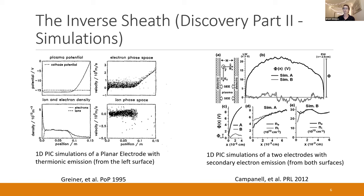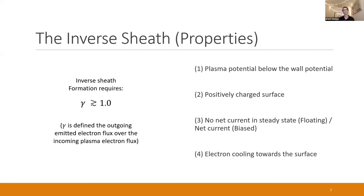Looking at phase space — velocity as a function of x — electrons moving to the right have positive velocity and to the left negative, while ions are trapped in a region of phase space and cannot reach either boundary. This was a 1D PIC simulation by Griner two years after his initial experiments. Michael Campanelle later showed that with two surfaces having strong secondary electron emission, you can force the plasma potential everywhere to be below the surface potential.